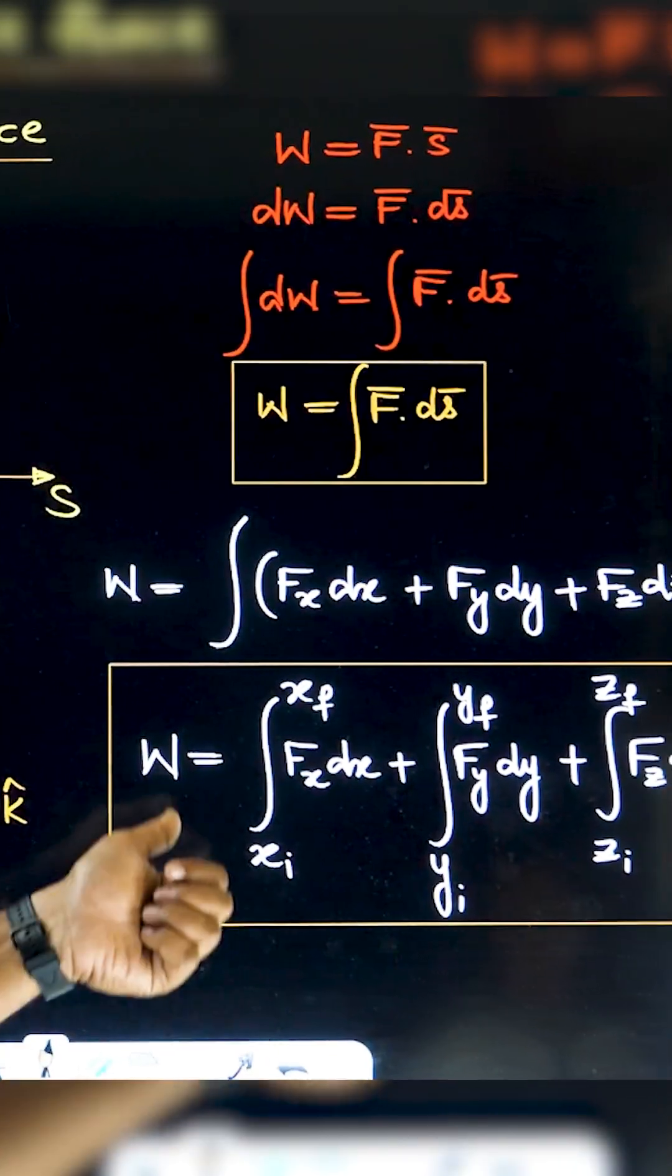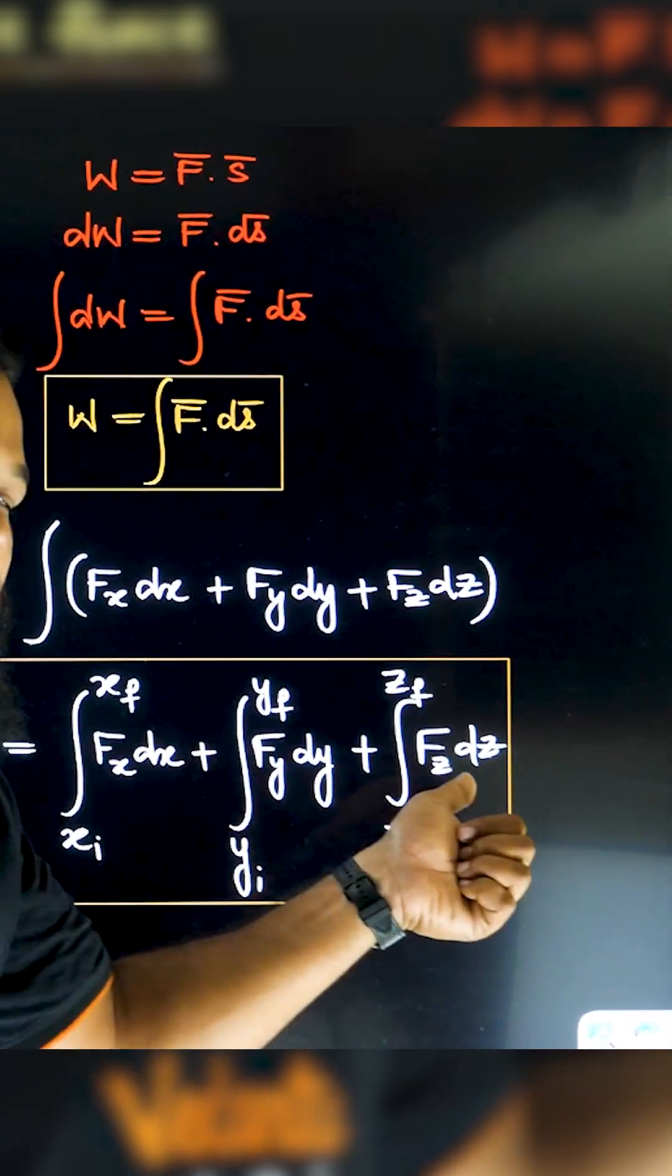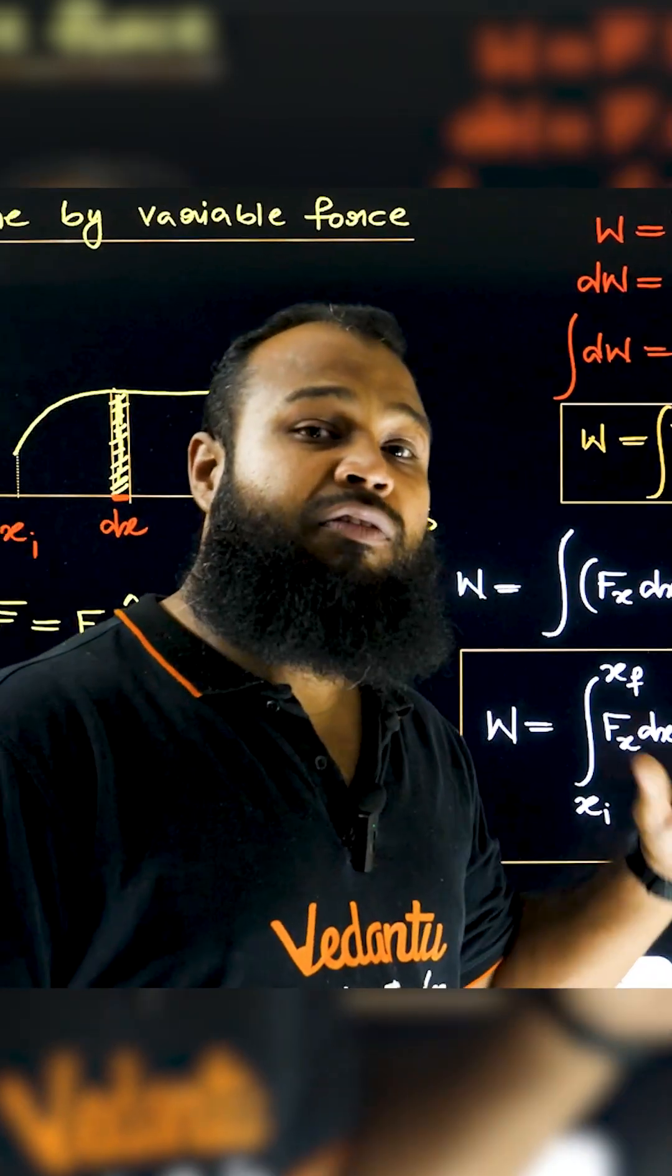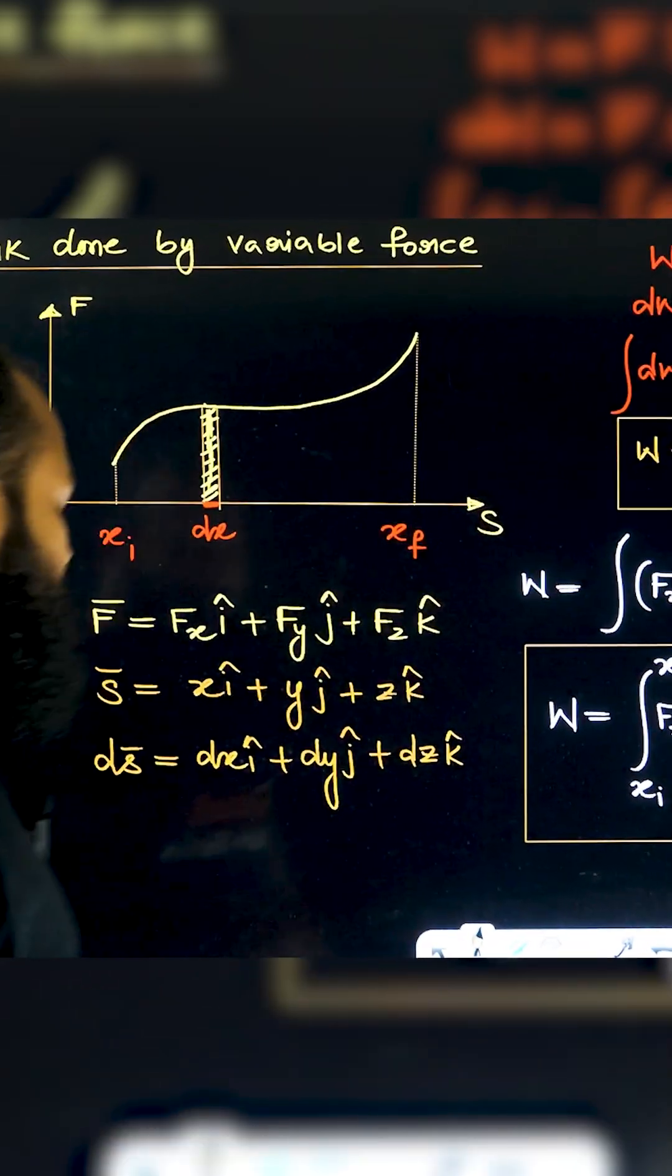For a particle moving in xyz space, you can use the integral: ∫(Fx dx + Fy dy + Fz dz), with limits from initial position to final position in a three-dimensional Cartesian coordinate system.